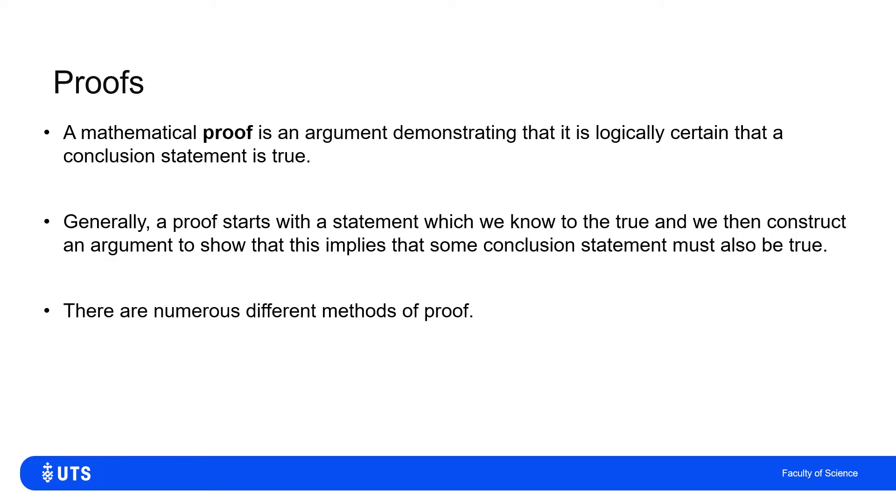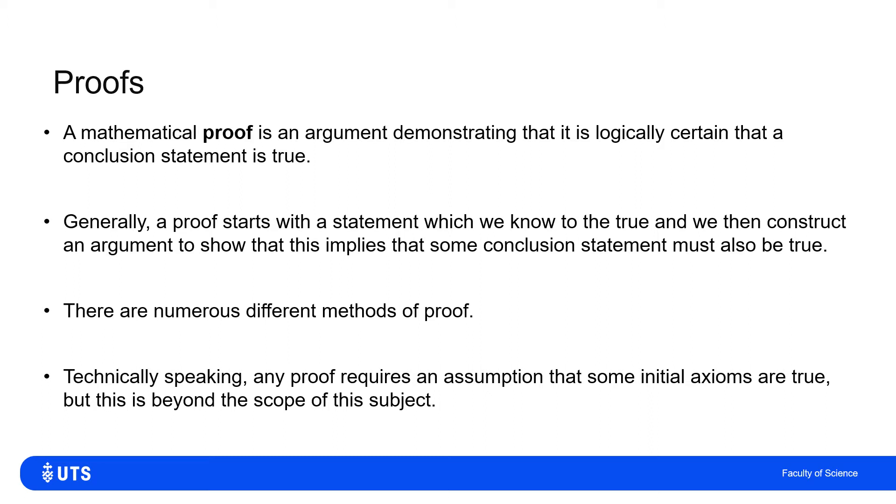Now, there are a few different methods of proof. Technically speaking, I don't suppose we can really prove anything without reference to something else. We could only say that if we assume some base truth to be true, then we can say that the consequence of that assumption means that everything else afterwards is true. And it is well beyond the scope of this subject, but there's a set of mathematical axioms which we agree to be true. And from that, we can then prove everything else. If you're interested in reading more about the mathematical axioms, I would encourage you to do so, but we're not going to cover those in this subject.